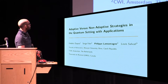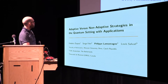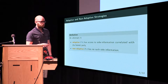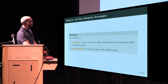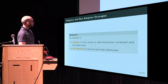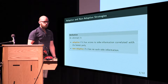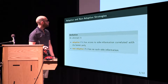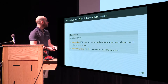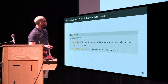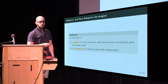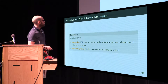We're talking about adaptive and non-adaptive strategies, so let me define that on the first slide. Forget everything you know about adaptivity in cryptography — this is the only definition you're going to need for the rest of my slides. We say that an adversary is adaptive if it has access to some side information that is correlated in some way to the honest participant. We'll have classical and quantum side information, and the adversary is non-adaptive if it has no access to such side information.